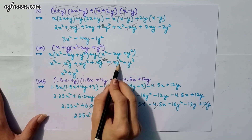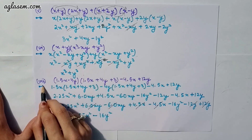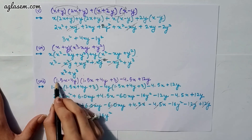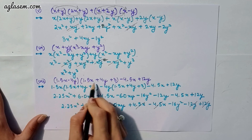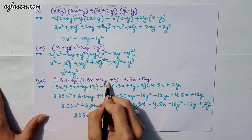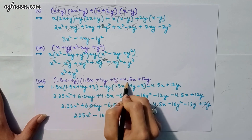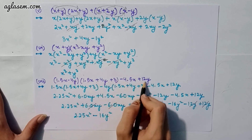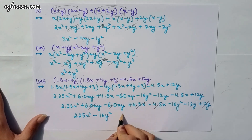The seventh part says (1.5x − 4y)(1.5x + 4y) + 3 − 4.5x + 12y. By solving this you will get 2.25x² − 16y².